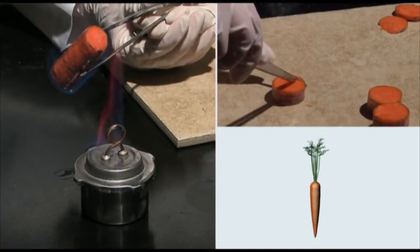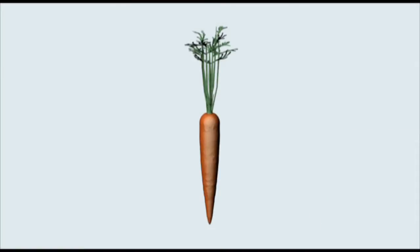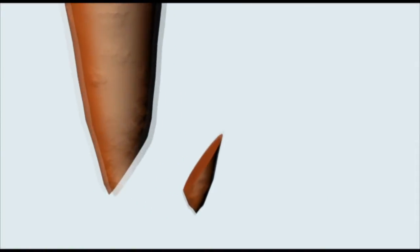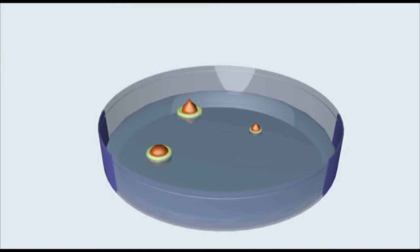Somatic embryogenesis is the process of creating a new plant embryo from a cutting of another plant. Pieces of the original plant are placed on a medium that contains auxins which encourage the growth of callus.